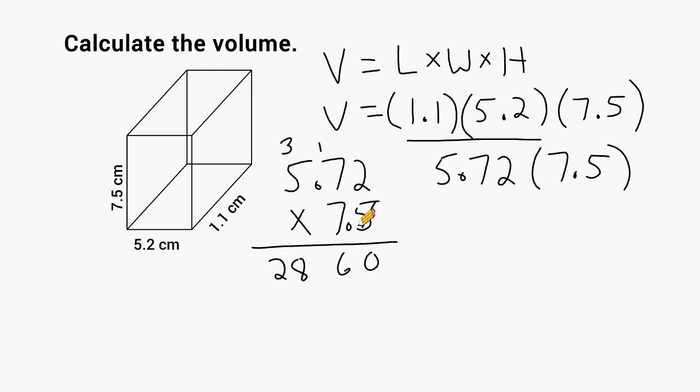And we put a 0 in this position. And 7 times 2 is 14, we carry a 1. 7 times 7 is 49 plus 1 more is 50. So we put a 5 up here. And we multiply 5 times 7, which is 35 plus 5 more is 40.